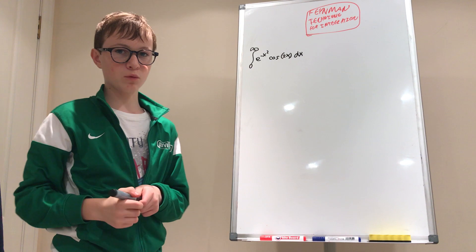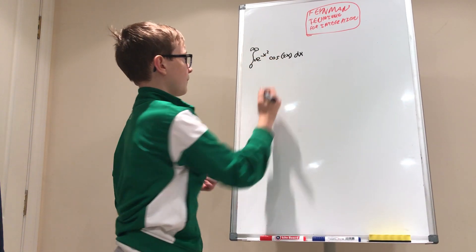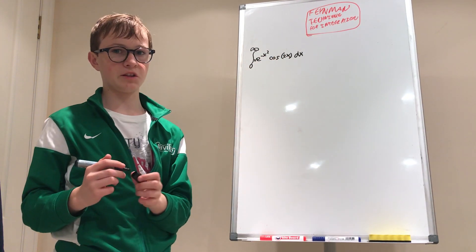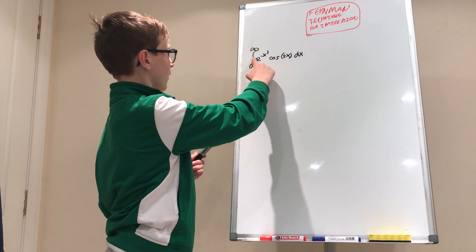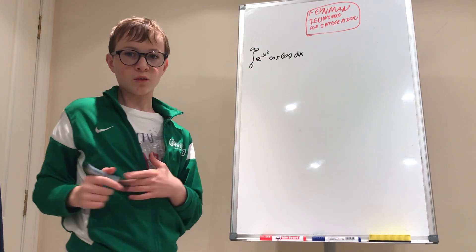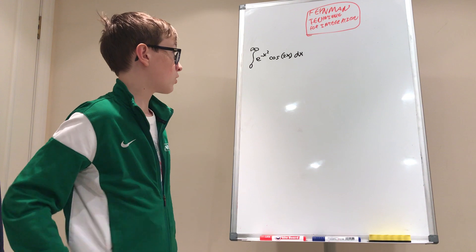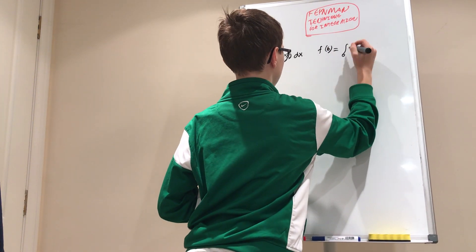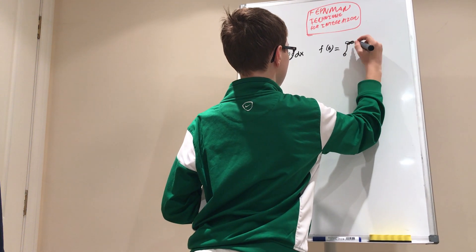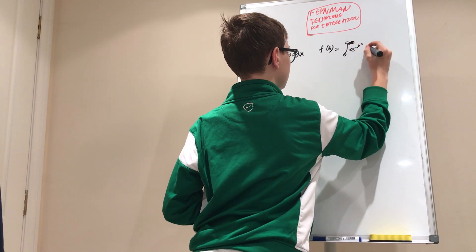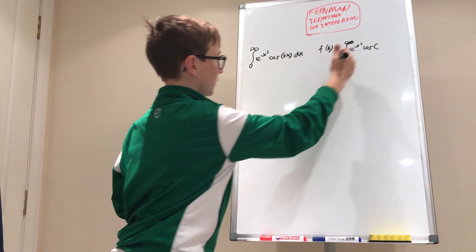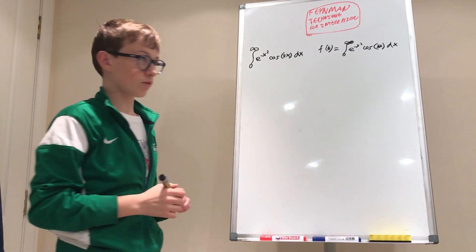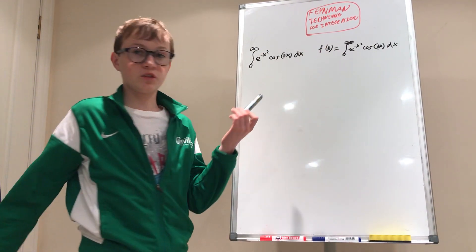What we really want is for an x to be here because we know how to integrate and differentiate this. We could possibly use integration by parts, but we don't have that x there. So we need to use the Feynman technique for integration, which means we let f(b) equal the integral between 0 and infinity of e to the negative x squared times cosine of bx dx. We're allowed to do this because if you plug in b=2 we get our answer.